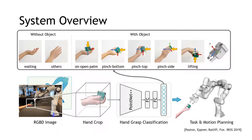The handover task is modeled as a robust logical-dynamical system following our previous work. It generates motion plans that avoid contact between the robot gripper and the giver's hand based on the human grasp classification.